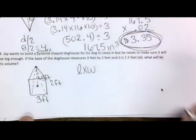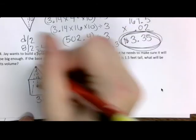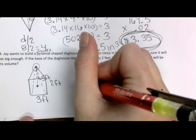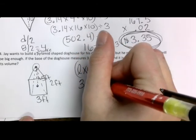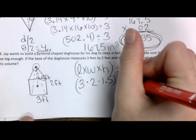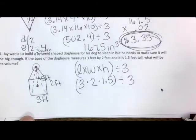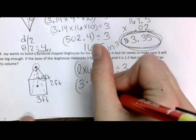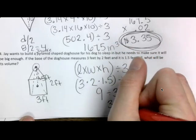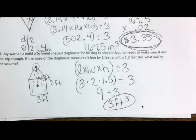So, I'm doing my base, which is length times width, times my height. Because it is a point at the top, I'm going to divide my answer by 3. So, I have 3 times 2 times 1 1⁄2, all divided by 3. When you multiply these three numbers together, what do you get? 9 divided by 3 is 3 feet cubed. That is 3 feet cubed.